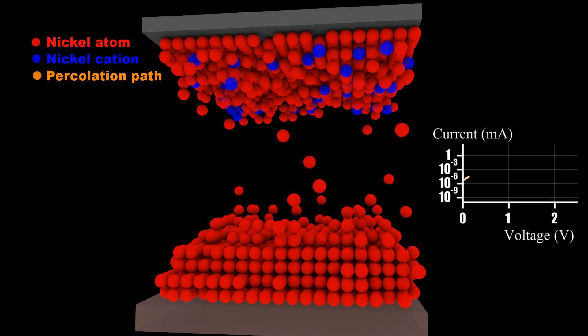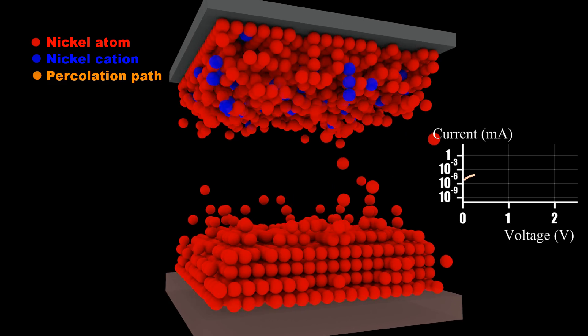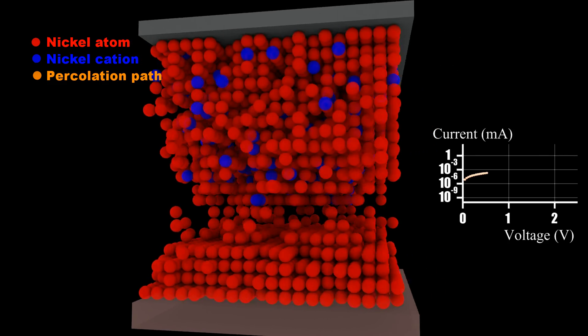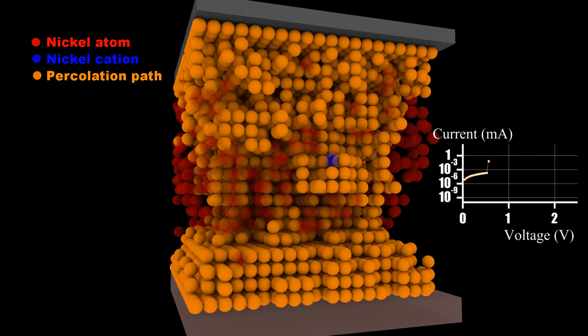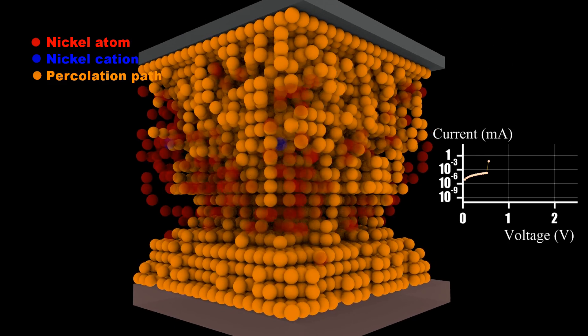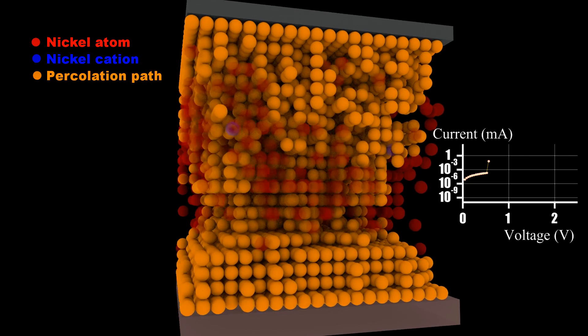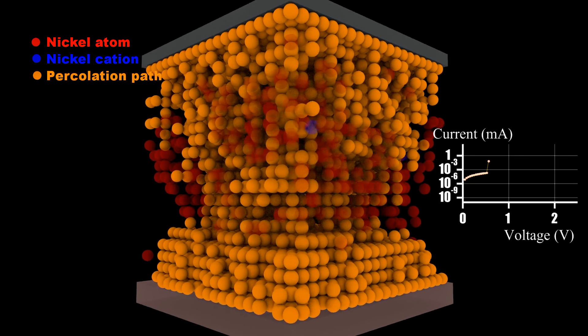After the reset process, a set process starts in the unipolar operation regime of these resistive RAMs.